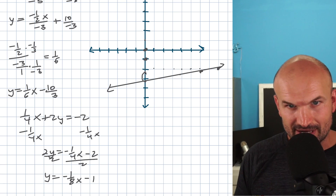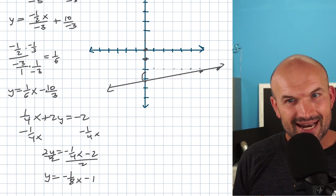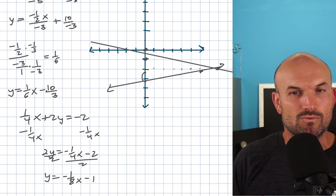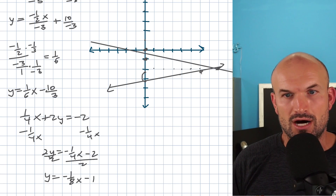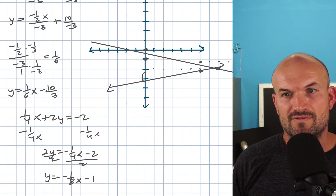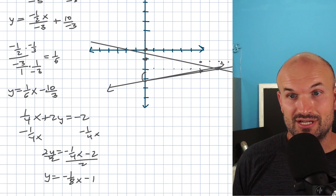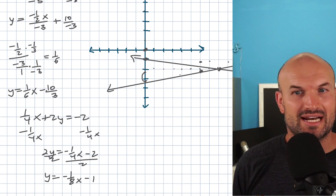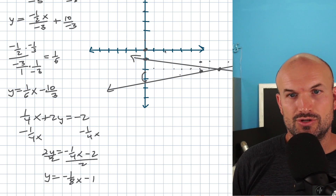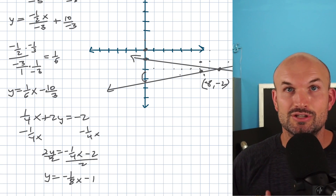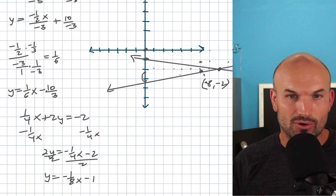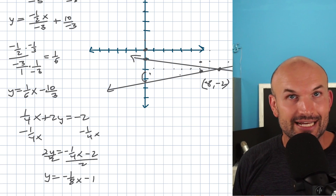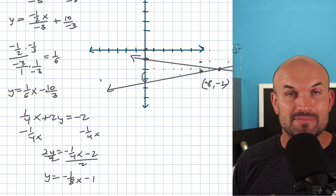My graph might be a little off. It looks like these two graphs are going to intersect at around negative 8 down to negative 2. The best way to check this would be an algebraic approach. Graphing depends on precision — it's just important to understand how to graph something when you have fractions in slope-intercept form. You don't always have to have a y-intercept as an integer to be able to graph the equation — just keep the spacing exactly the same.